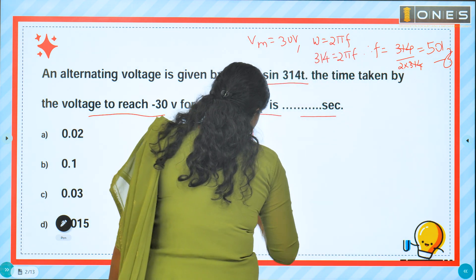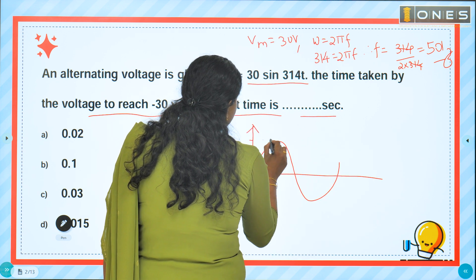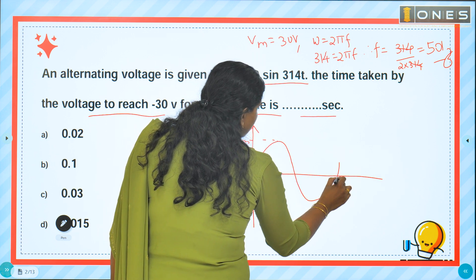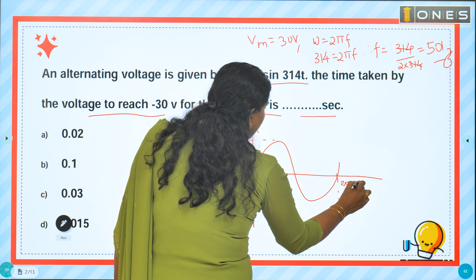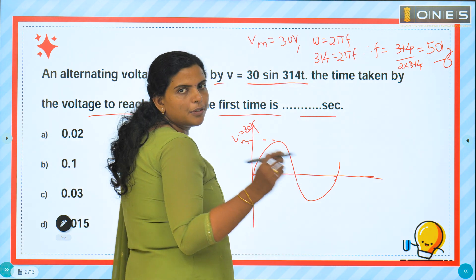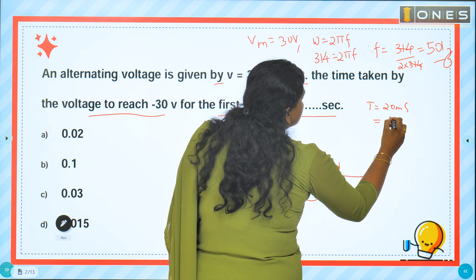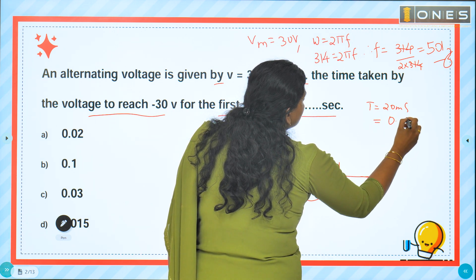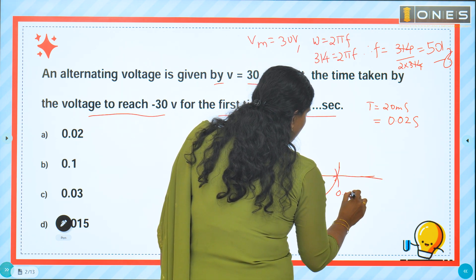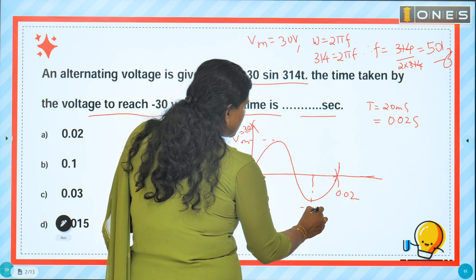We have a sine wave. Vm is equal to 30 volt. The time period is 20 milliseconds, or 0.02 seconds. Now, let us find the time taken to reach minus 30 volt for the first time.